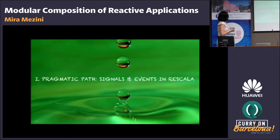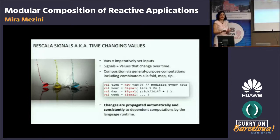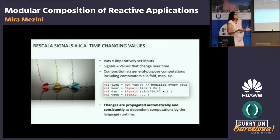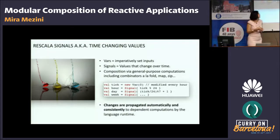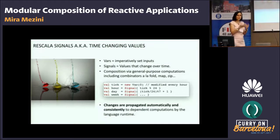First part: the pragmatic path — signals and events in ReScala. ReScala teaches two concepts: VARs and signals. VARs are variables — they are imperatively set inputs — while signals are basically these time-changing values, well-known from functional reactive programming languages. They are values that change over time, composed from VARs and other signals. For the composition, you can use any general-purpose computation expressions, including combinators, higher-level combinators like fold, map, zip, and so on.